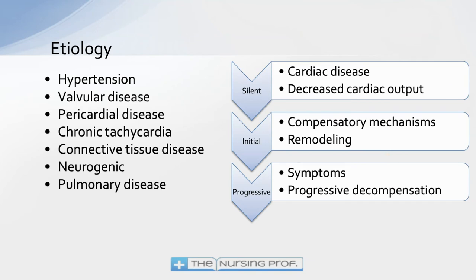Etiologies for heart failure include hypertension and valvular disease. The hypertension caused by decreased cardiac output is actually causing more heart failure. Another etiology is chronic tachycardia — if the sympathetic nervous system is telling the heart to beat harder and faster due to decreased cardiac output, we get chronic tachycardia which further worsens heart failure. So the main treatment for heart failure is to stop the compensatory mechanisms that are making it worse.